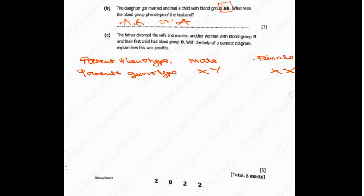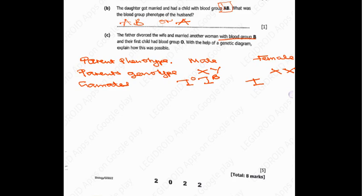And then the gametes. For the father, you're going to write I-O and I-B. These are the gametes for the father or the husband. And then for the wife, we get I-O and I-B as well, since she also has blood group B.